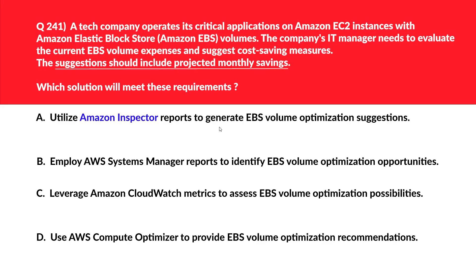Let's look at this question. We'll first look at option A — Amazon Inspector. The question is looking for projected monthly savings, which is related to finance or cost. But Amazon Inspector is a security assessment service and cannot be used for cost optimization recommendations as required by the question. So we'll reject this.